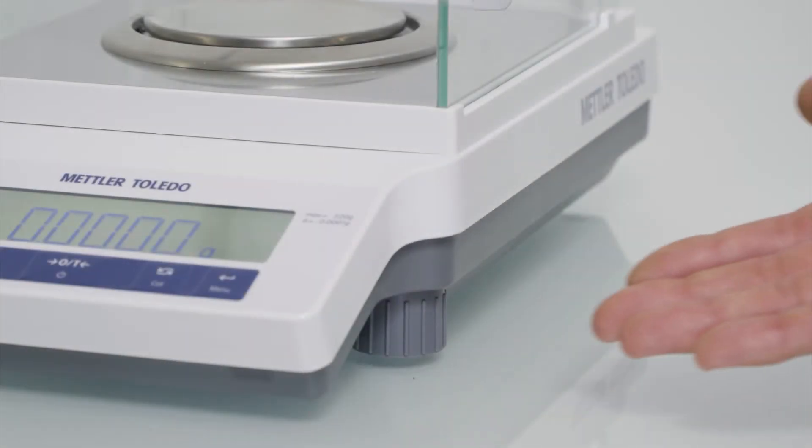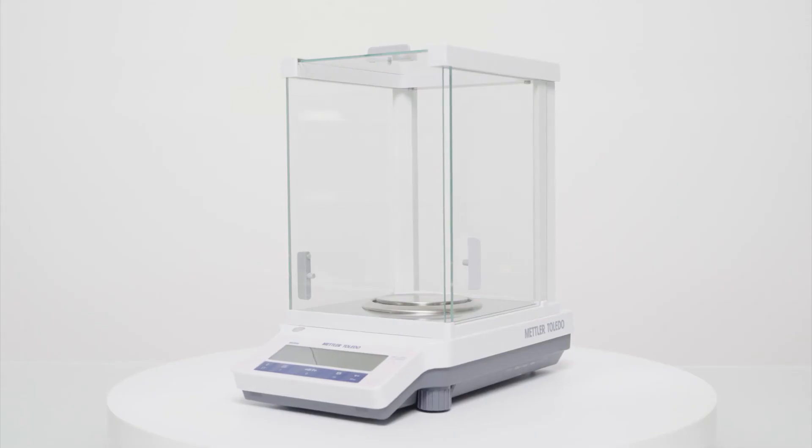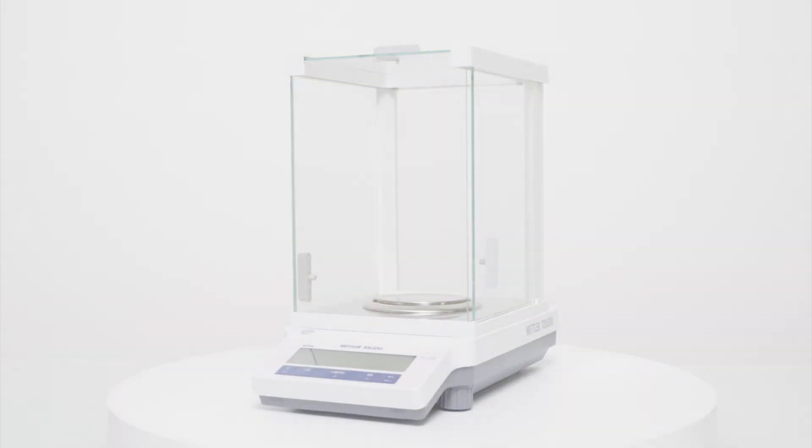ME balances are designed to make cleaning easy and keep them in good shape for years to come. They have smooth and flat surfaces such as a stainless steel platform and weighing pan. They are made from durable and chemical resistant materials and are easy to disassemble.